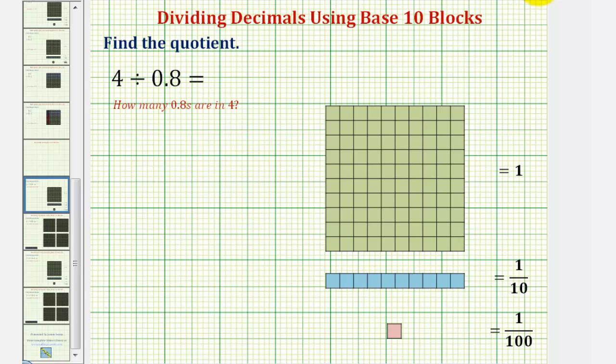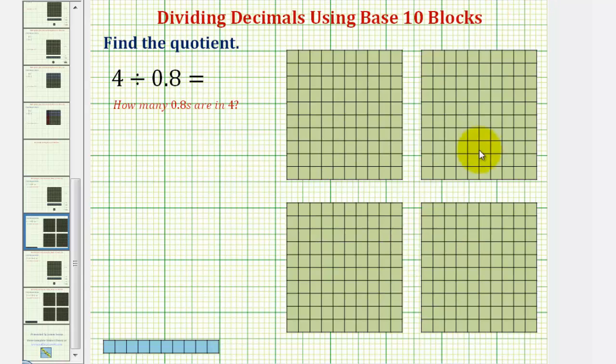We'll begin by modeling four using four flats, as we see here. And because we can model eight-tenths using eight longs, we want to determine how many copies, or how many sets of eight longs there are in four flats. So let's go ahead and count them.